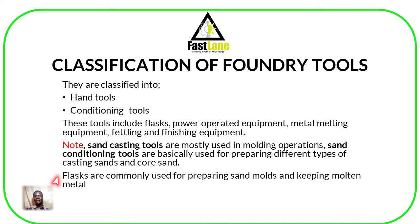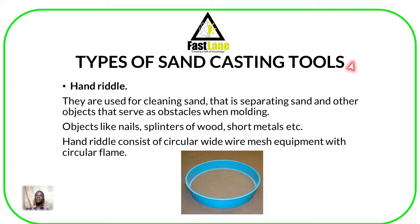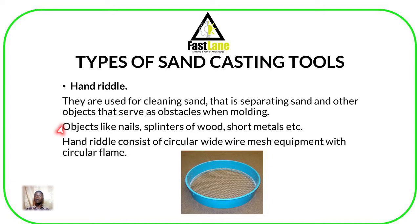One of the different tools we are going to look at is what we call a hand riddle. A hand riddle is used for cleaning sand — specifically to separate sand from other objects that serve as obstacles when it comes to molding. Such obstacles may be things like nails, splinters of wood, or short metals. We remove them by use of a hand riddle.